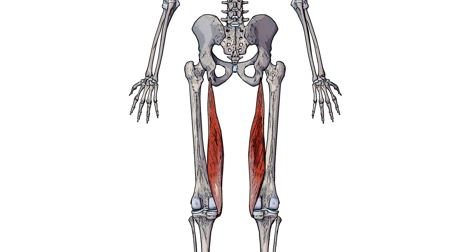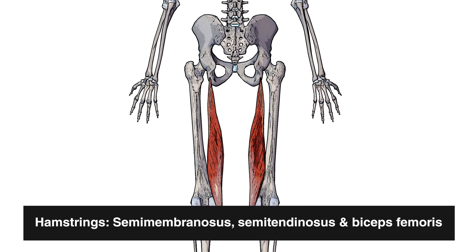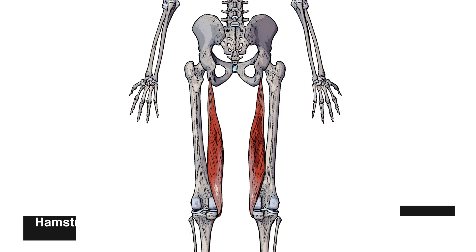We can see pictured here the semimembranosus muscle. The semimembranosus is one of the three hamstring muscles. The other two are the biceps femoris and the semitendinosus muscle. Let's swap over to a superficial view now and take a look at this amongst the other muscles of the thigh.